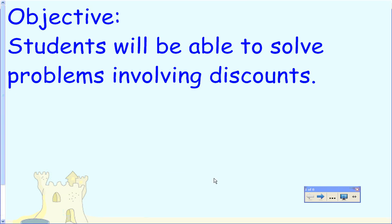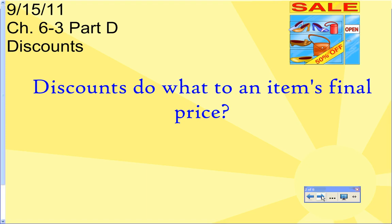I'm trying to lose my voice today so you'll have to bear with me. The objective for this lesson is that you'll be able to solve problems involving discounts. We're also going to take this up a notch at the end and combine discount problems and tax problems together. These notes are from chapter 6.3 part D in your textbook, and just like in the last lesson, this is about what discounts do to your final price.